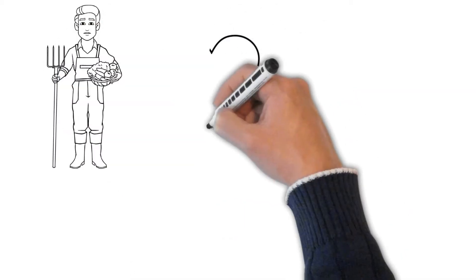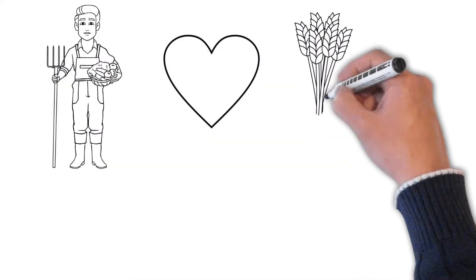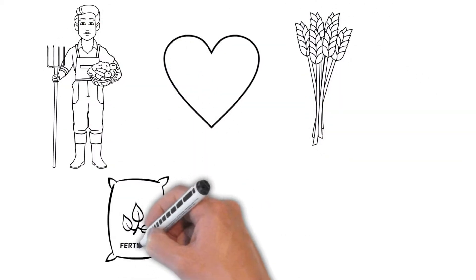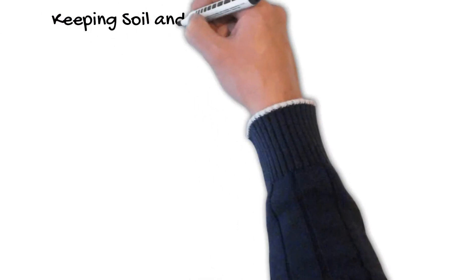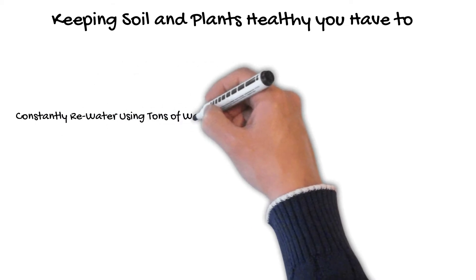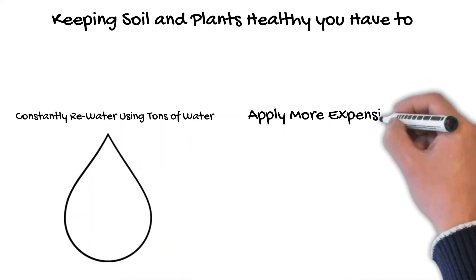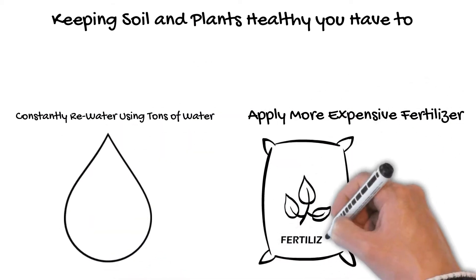Because he cares about the quality of his soil and crops, his options are limited and fertilizer tends to be very pricey. Bob has to consistently re-water and apply more and more fertilizer to keep his crops and soil healthy.